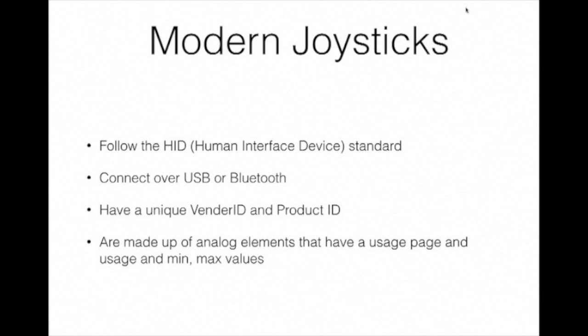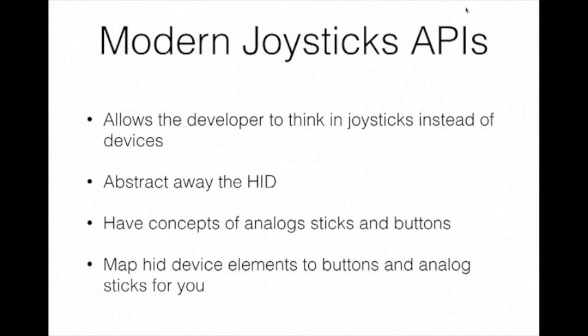Joysticks are made up of what are called elements. An analog stick is an element; the D-pad is an element. These have min-max values, usage pages, and usages to help identify what they're supposed to do. Modern joystick APIs — like DirectInput, Android's API, and Apple's game controller classes — abstract away the HID layer so programmers don't have to deal with the nitty-gritty. You don't have to figure out whether a min value of 1-0 means it's a button or a D-pad; that gets abstracted away.